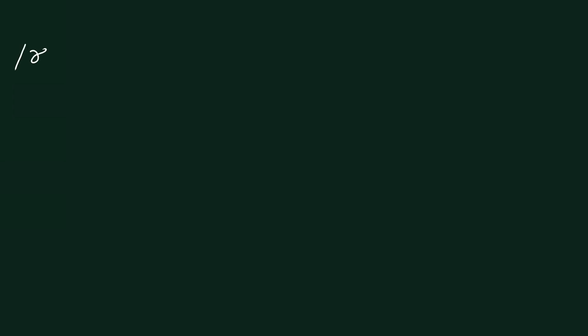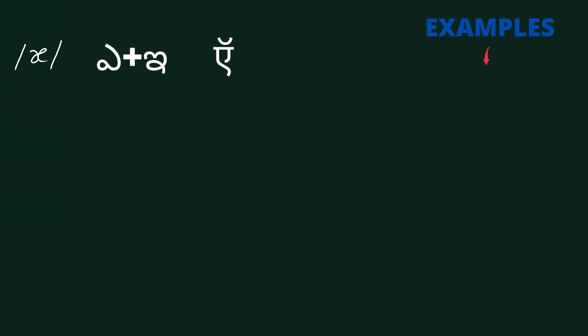Moving further, we have /æ/. It is an open and open-mid front unrounded vowel. Examples are: apple, axe.